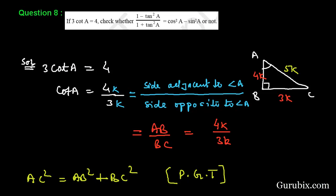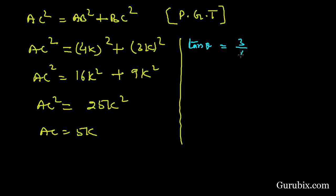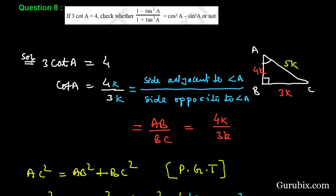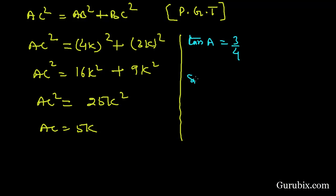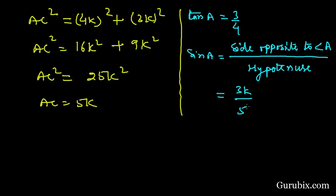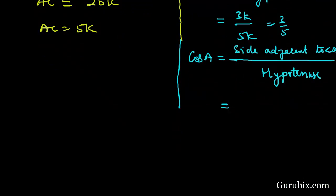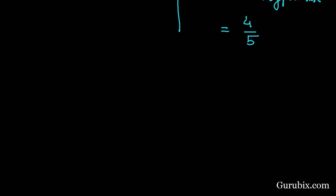Now we shall find the values of tan A, sin A, and cos A. We know that tan A is the reciprocal of cot A, so tan A = 3/4. Sin A = opposite over hypotenuse = 3k/5k = 3/5. Cos A = adjacent over hypotenuse = 4k/5k = 4/5.